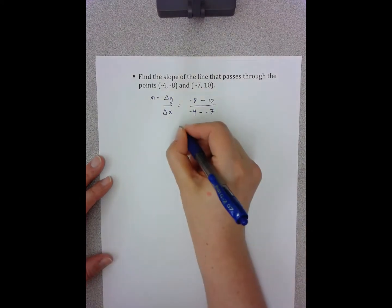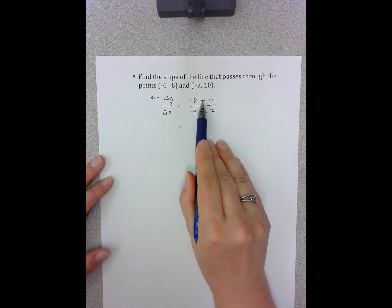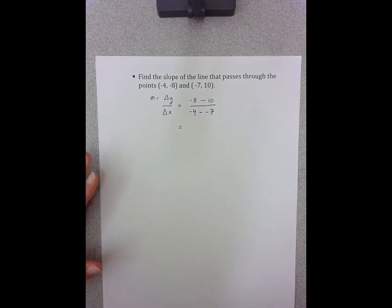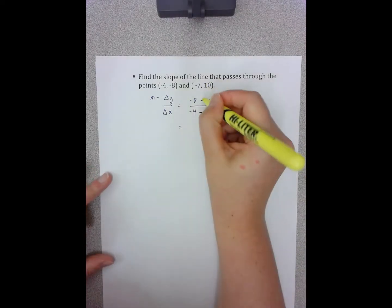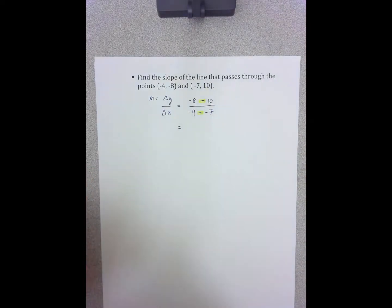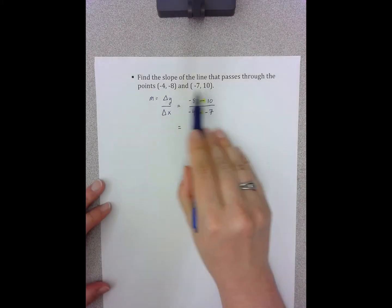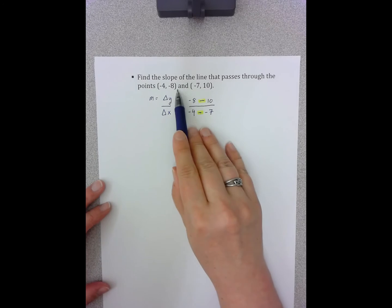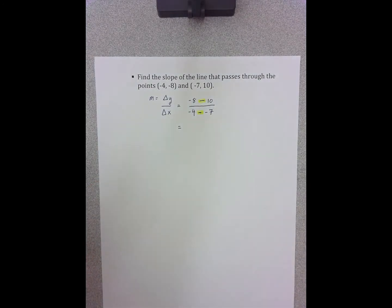The most common mistake students make is to not put the change in part of these equations. So I'm going to highlight this so that you can very clearly see that I am subtracting the two values, regardless of if the values are one positive one negative, two negative, two positive, doesn't matter.